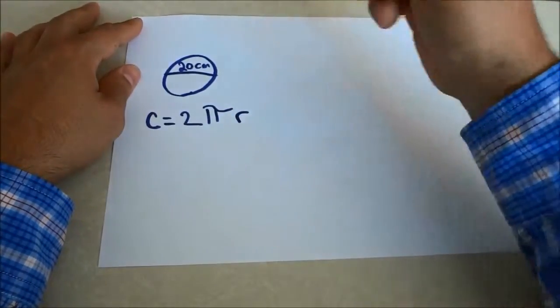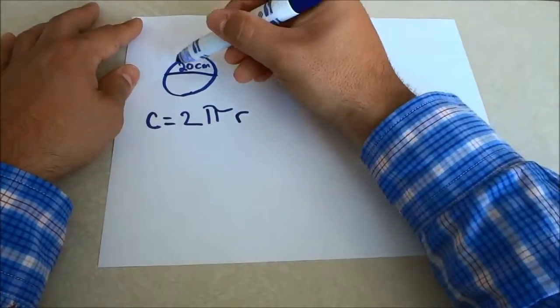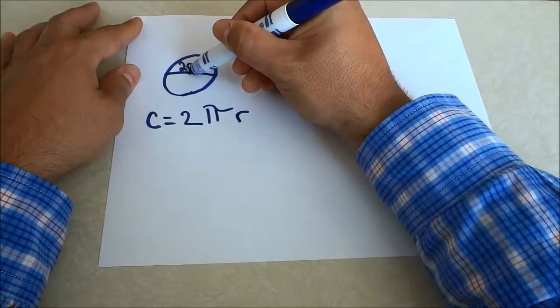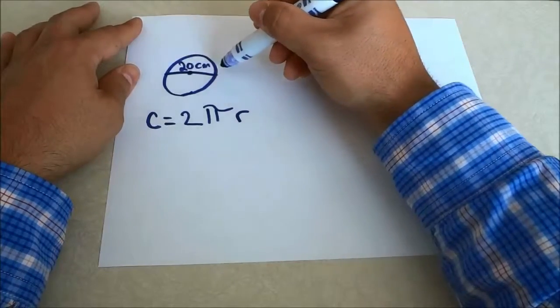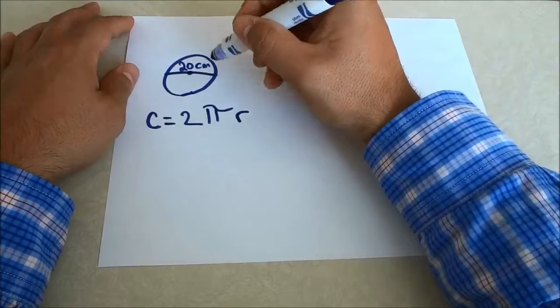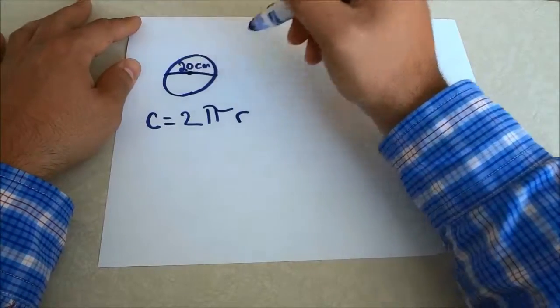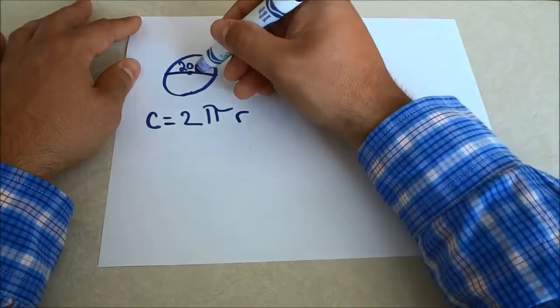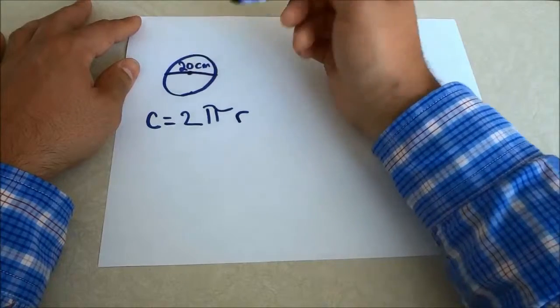Now r stands for radius. As you can see, we don't have the radius for this circle. We have the diameter, which is 20 centimeters. But radius is half of the diameter because it is half of the length.